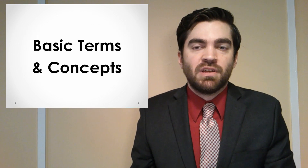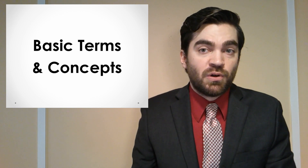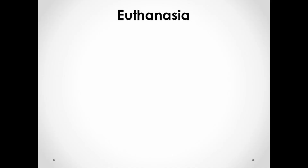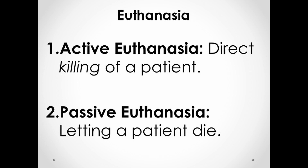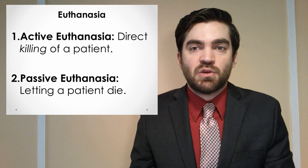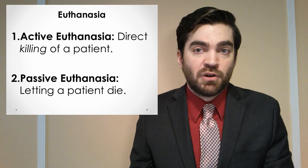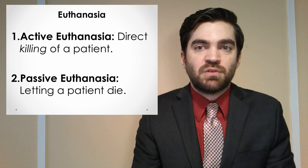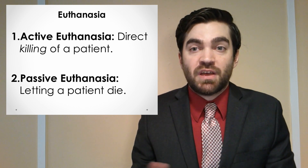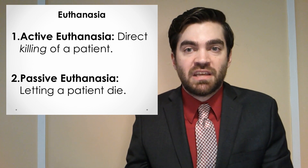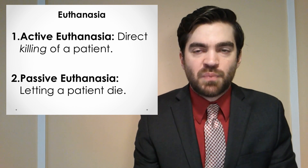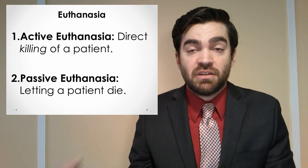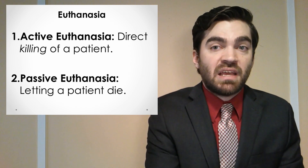The term euthanasia just means good death or easy death, and it can be split into two major categories. There's active euthanasia, which involves the direct killing of an individual, and there's passive euthanasia, which is usually associated with letting them die. In those cases, you simply don't step in to intervene to prevent death from occurring. There's a difference between directly killing an individual and simply not doing anything to prevent their death.